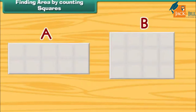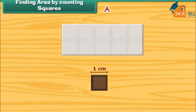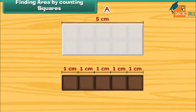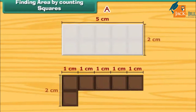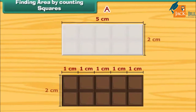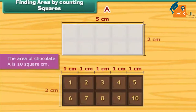Friends, we have these two chocolates. Let us find out which one is bigger and which one is smaller. We will take the help of one square piece of chocolate of side one centimeter. The length of chocolate A is five centimeters, so five squares can be arranged along its length. The width of this chocolate is two centimeters, so two squares can be arranged along its width. Thus, in total, ten squares can be arranged on it. So the area of chocolate A is ten square centimeters.